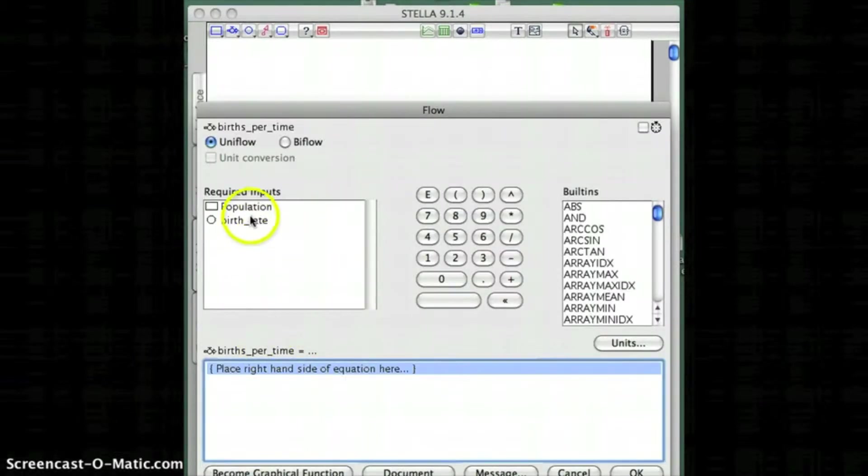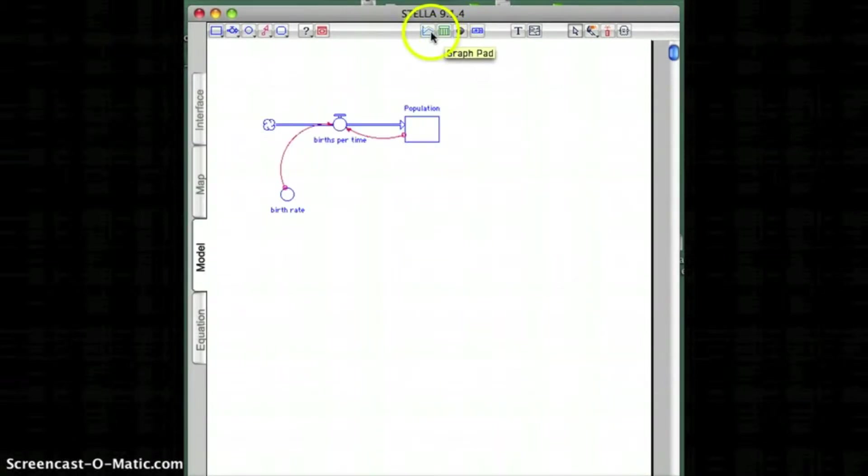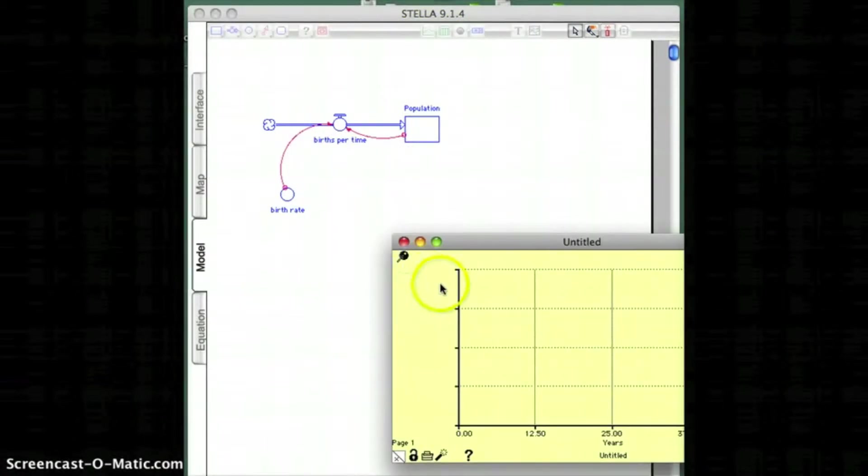Next, we're going to actually set that equation. So the births per time is going to be a function of population and birth rate. So that was just set up in that equation there. And again, put the units in. Next we're going to create a graph here.